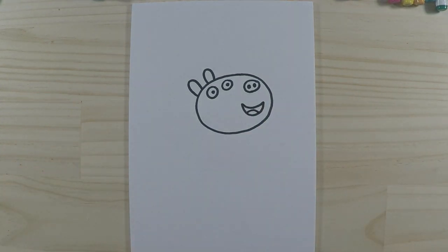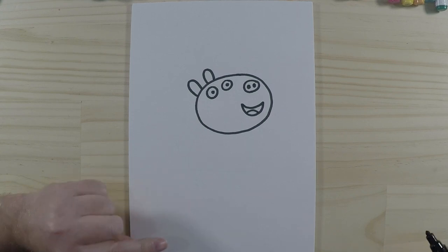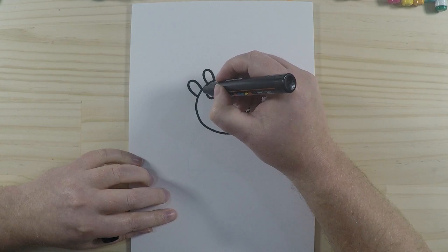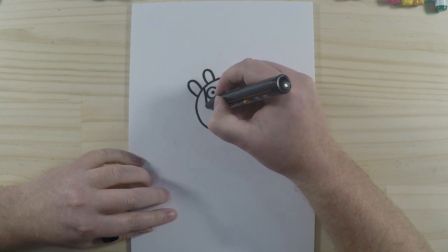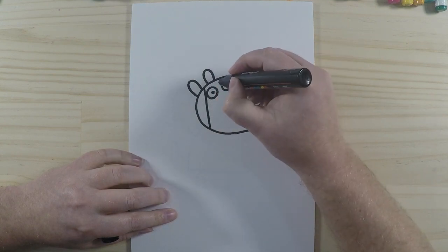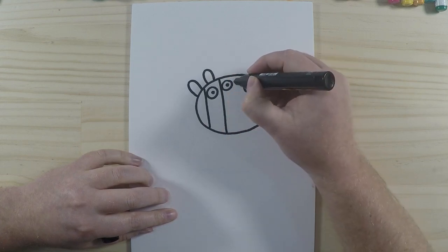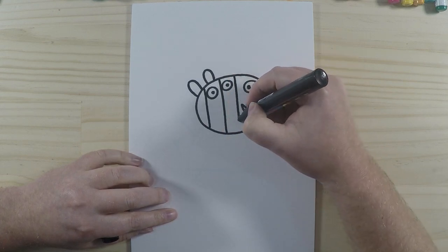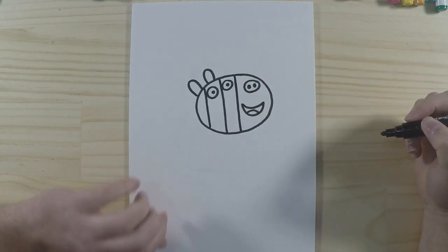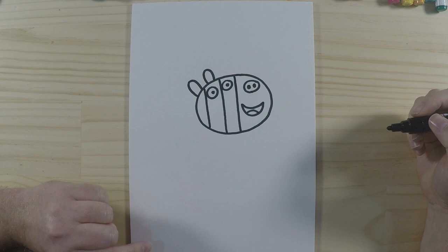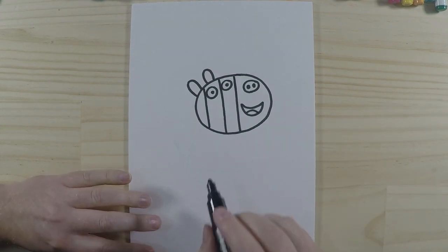Now because Zoe is a zebra she's made up of black and white stripes, so we're gonna draw some stripes on her here. So one here and another one here and we're doing one here. Okay, and we can color those in a little bit later. Right, so that's the head done.